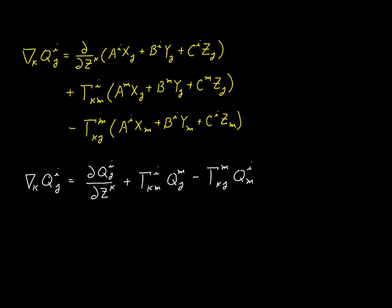Look how it works. First of all, we find the partial derivative of our second-rank tensor.